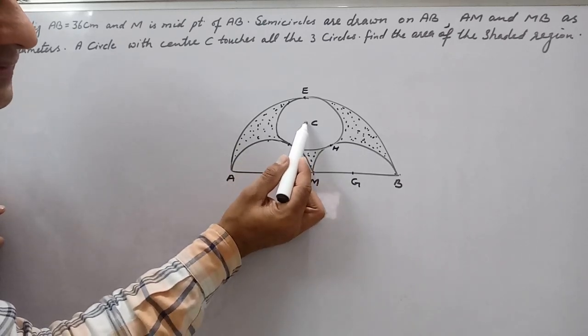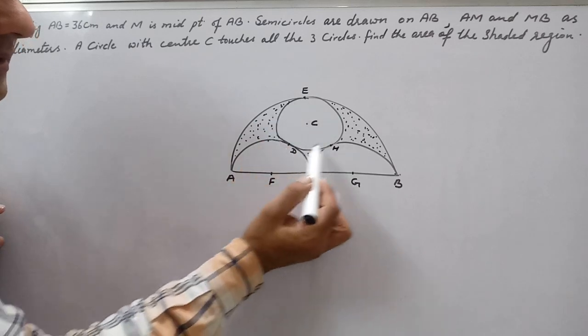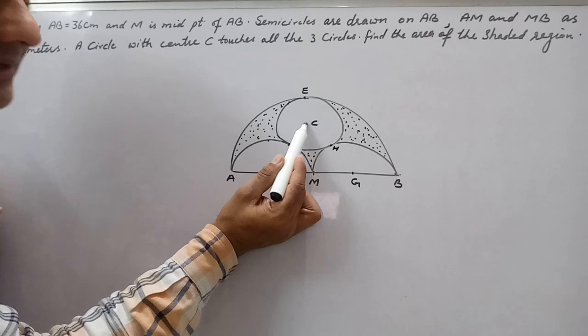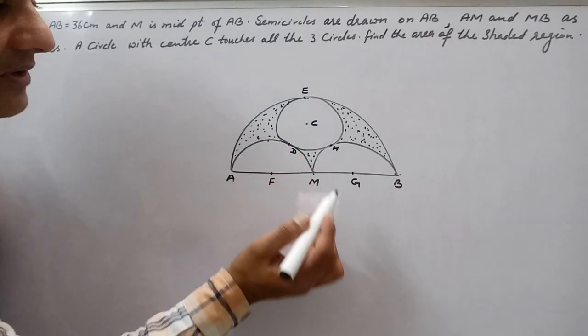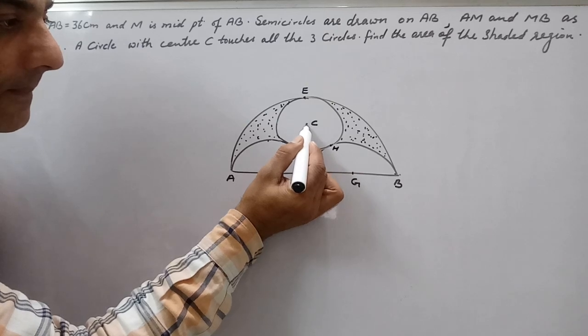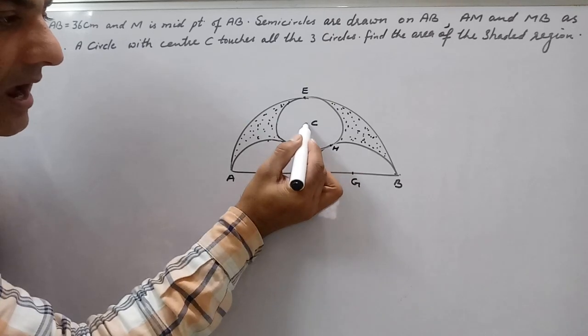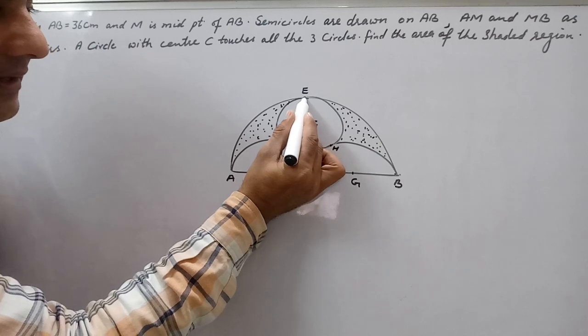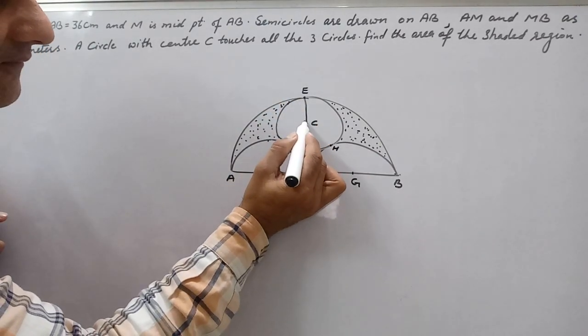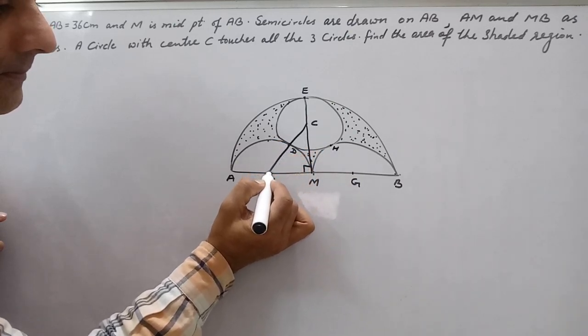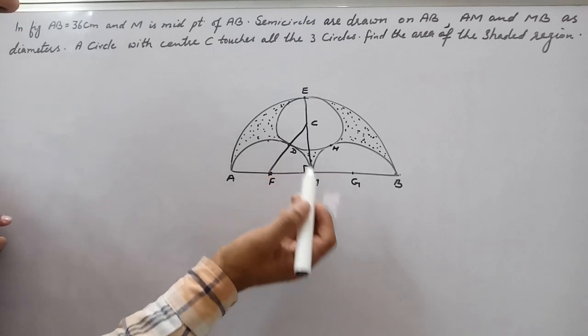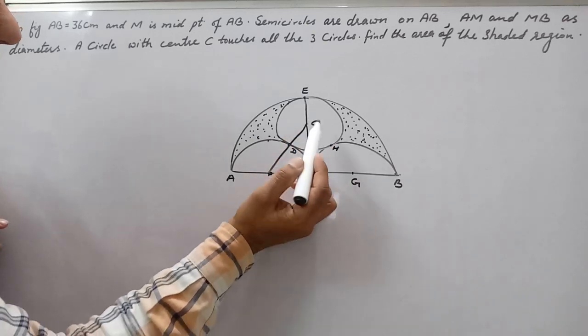We need to find the radius of this circle. The radius is not given for this circle, so our work will be to find the radius. What we do is draw a perpendicular from C on M. Take it further here till E, then join CF also.